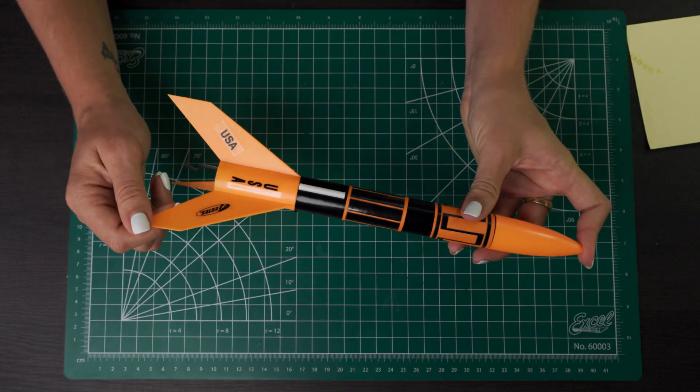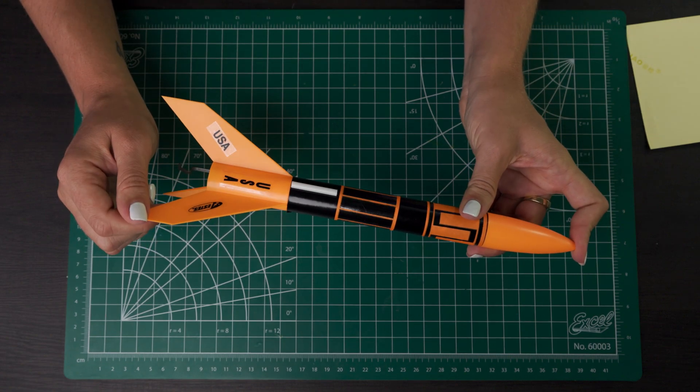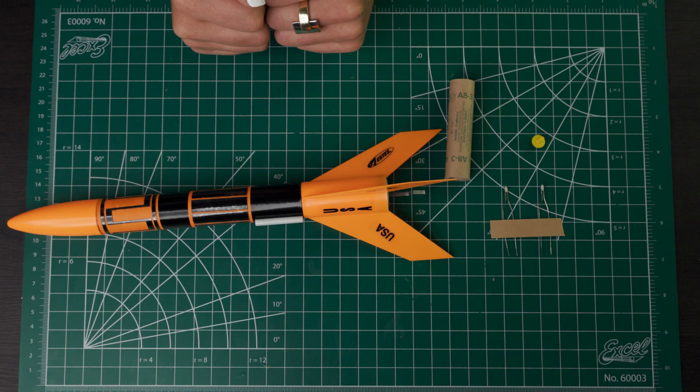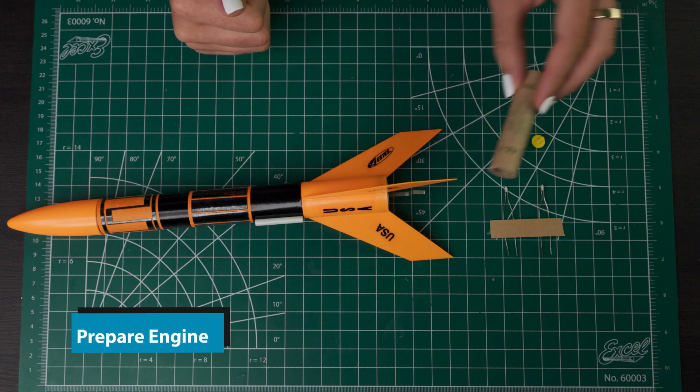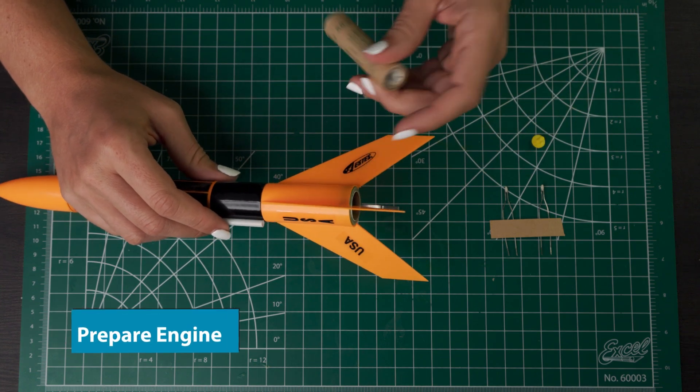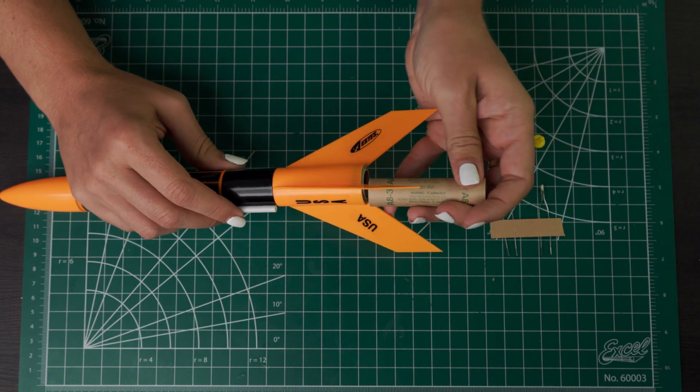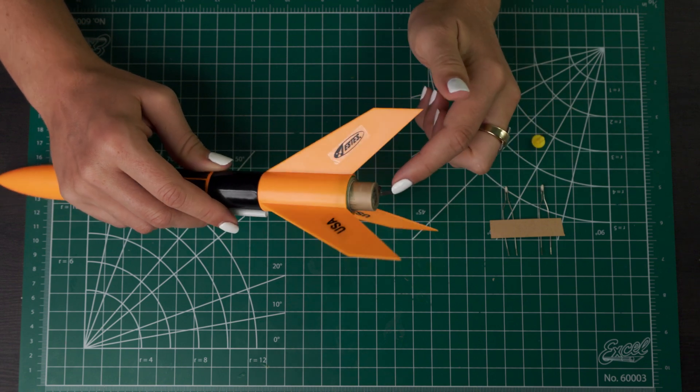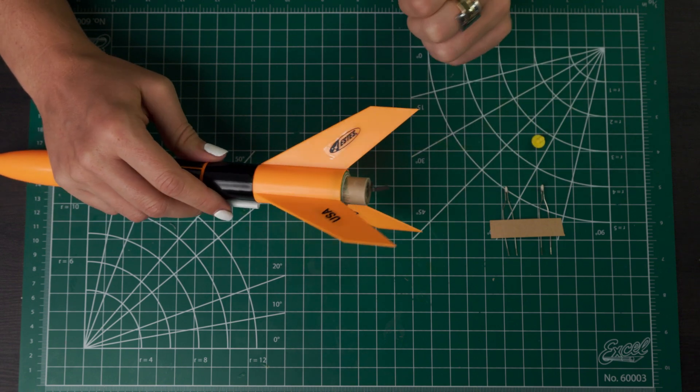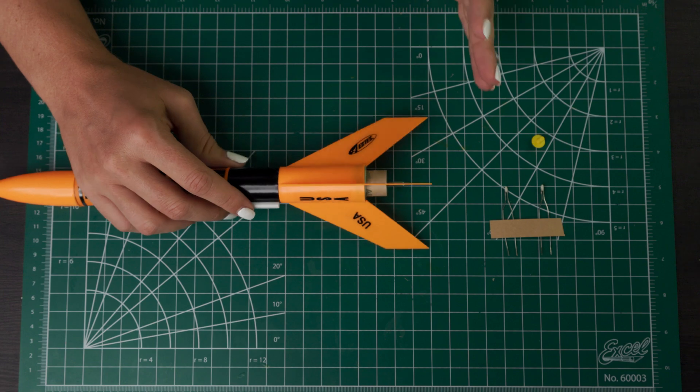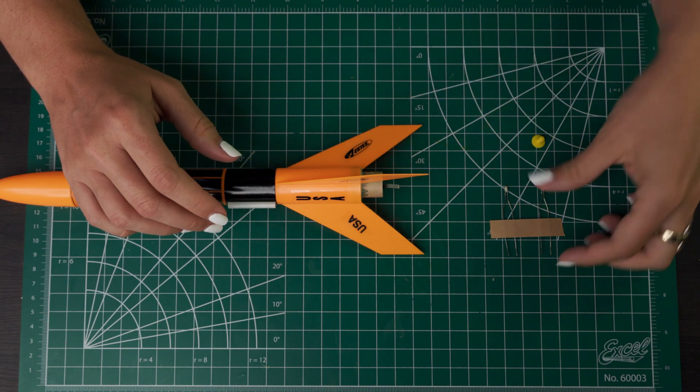Now your rocket is all built and ready to go. Next up, we will put the engine in. For the last step in preparing to launch, you'll take your engine, put it in the bottom here, making sure the nozzle is pointed out. And then this hook should come over the bottom of the engine. Then once you are outside ready to launch, you can put the starter in. Don't do this inside.